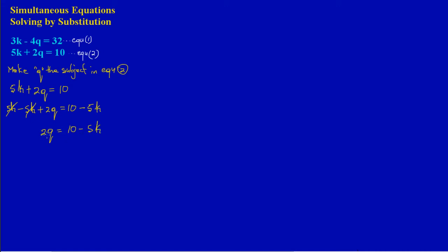Q is not yet the subject because there's a 2 in front of it. Since 2 is multiplying Q, I do the opposite — division. Dividing both sides by 2, the 2 cancels, giving Q equals (10 minus 5K) all over 2. I'll call this equation three.